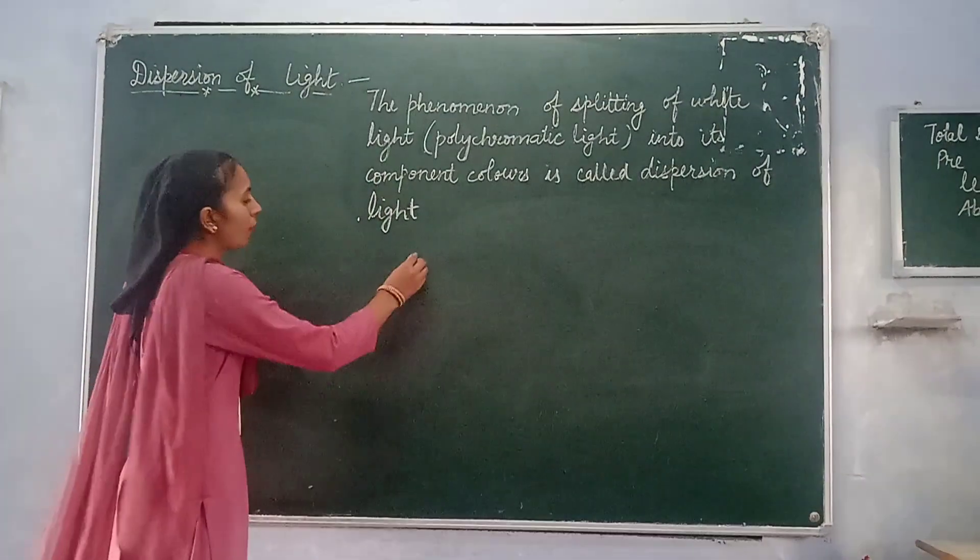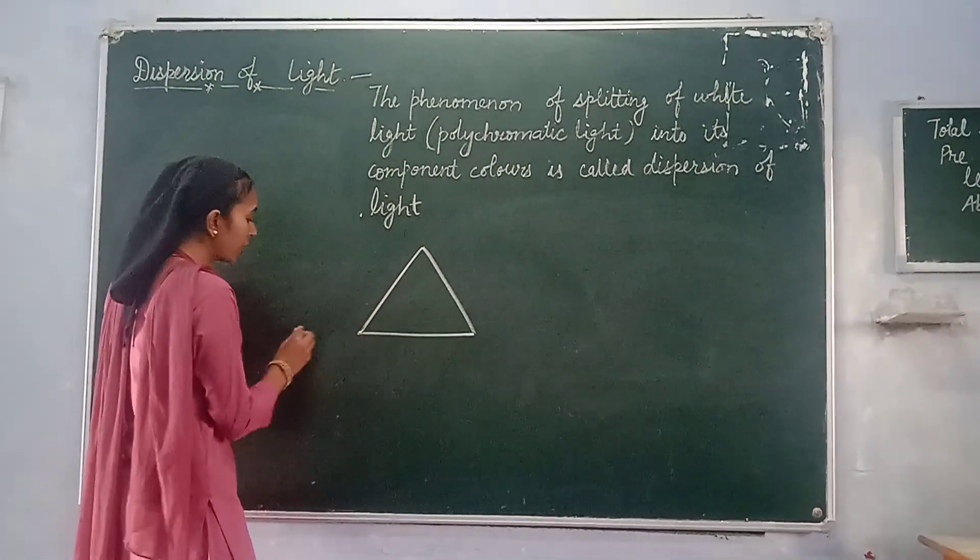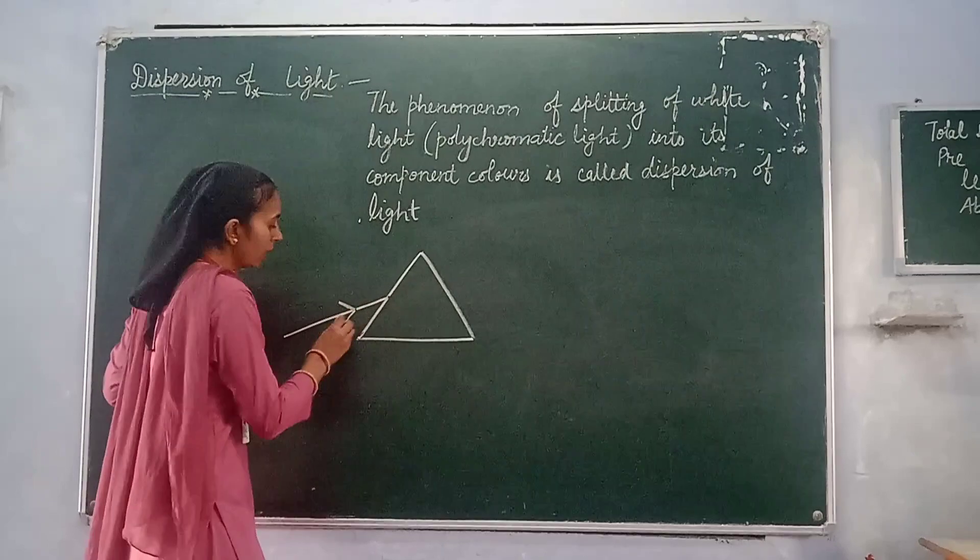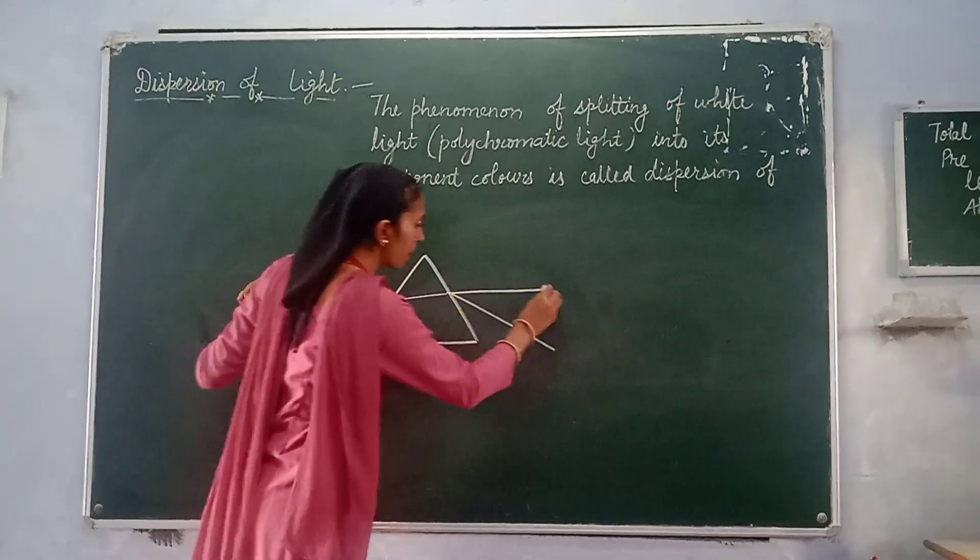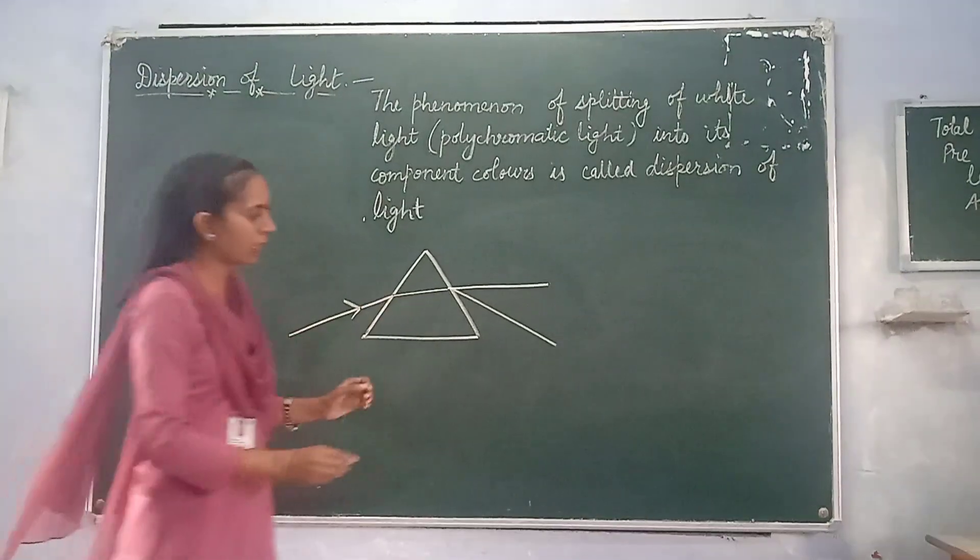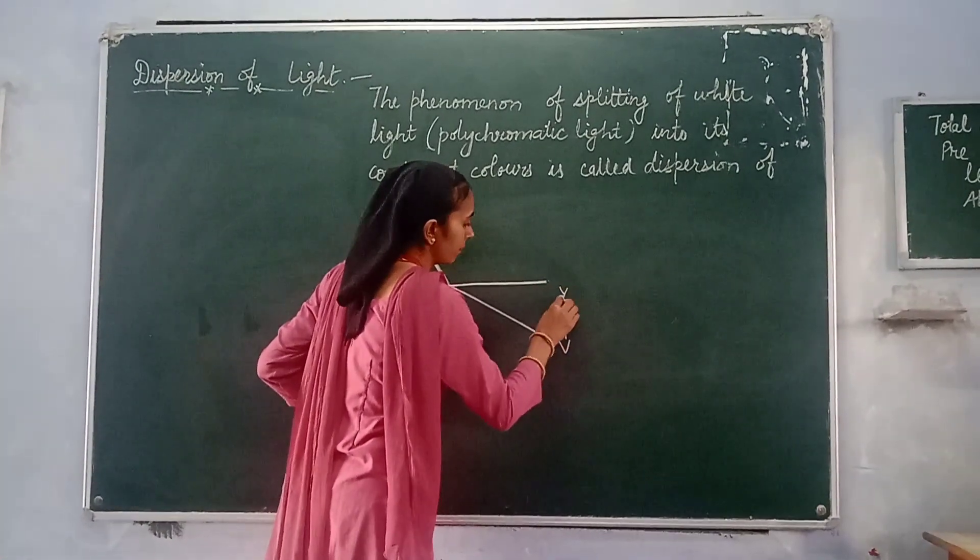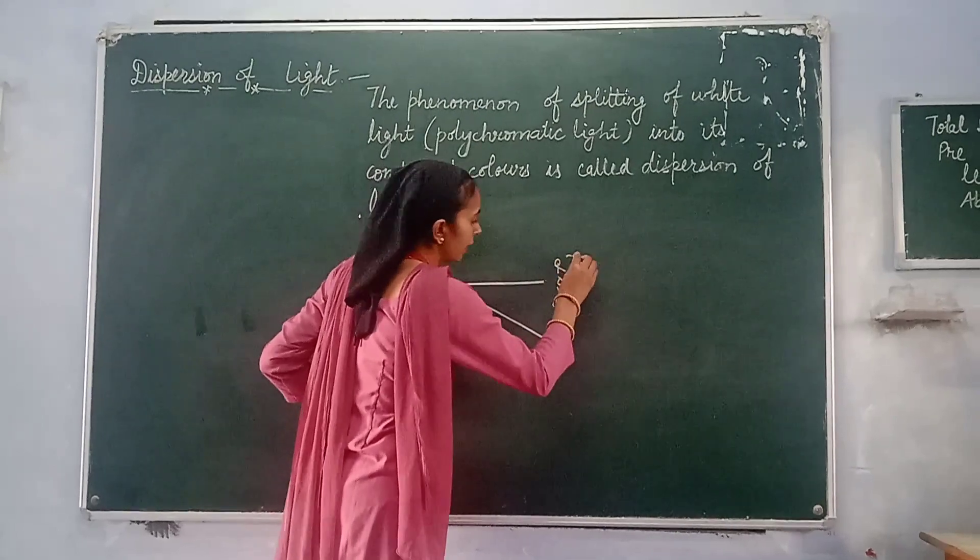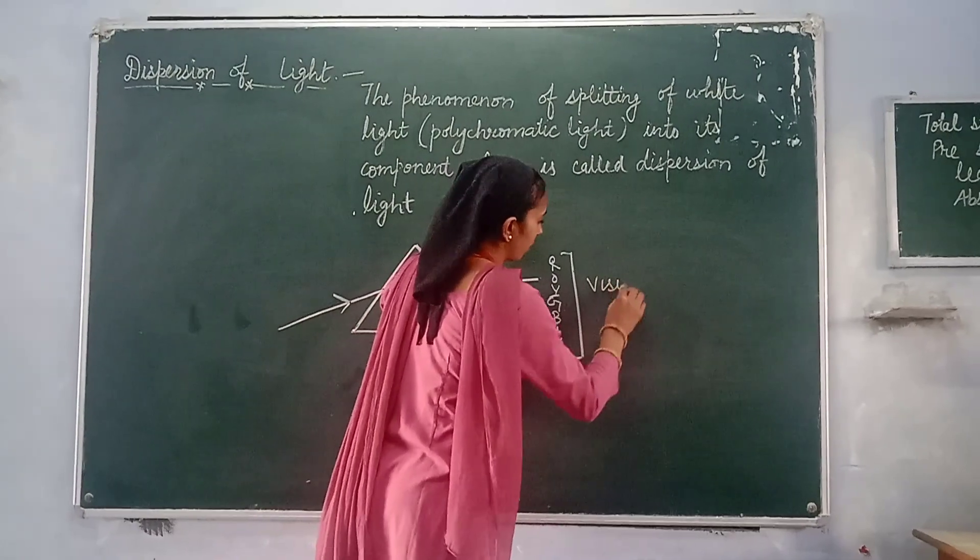And this splitting of white light into the component colors can be observed with the help of a prism. A ray of light passing through the prism can be split into its component colors. And the band of these seven colors is called visible spectrum.